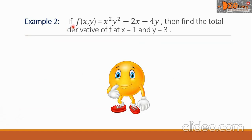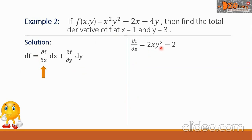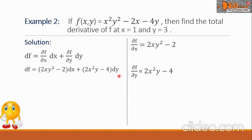Example 2: If f(x, y) equals x squared y squared minus 2x minus 4y, find the total derivative of f at x equals 1 and y equals 3. First, let us evaluate the total differential using the formula. The partial derivative of f with respect to x is 2xy squared minus 2. Then, the partial derivative of f with respect to y is 2x squared y minus 4. Now let us do the substitution respectively.